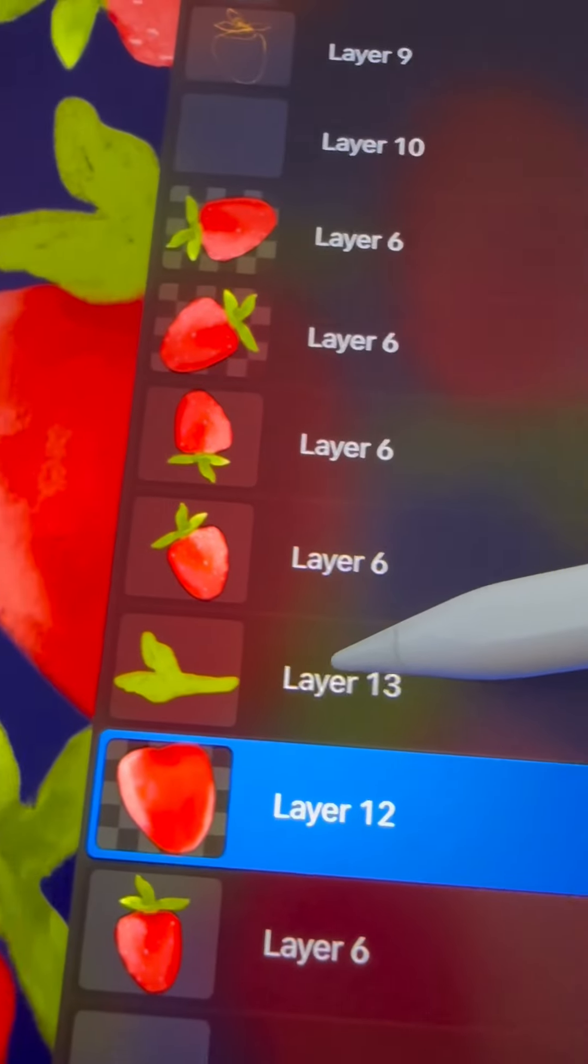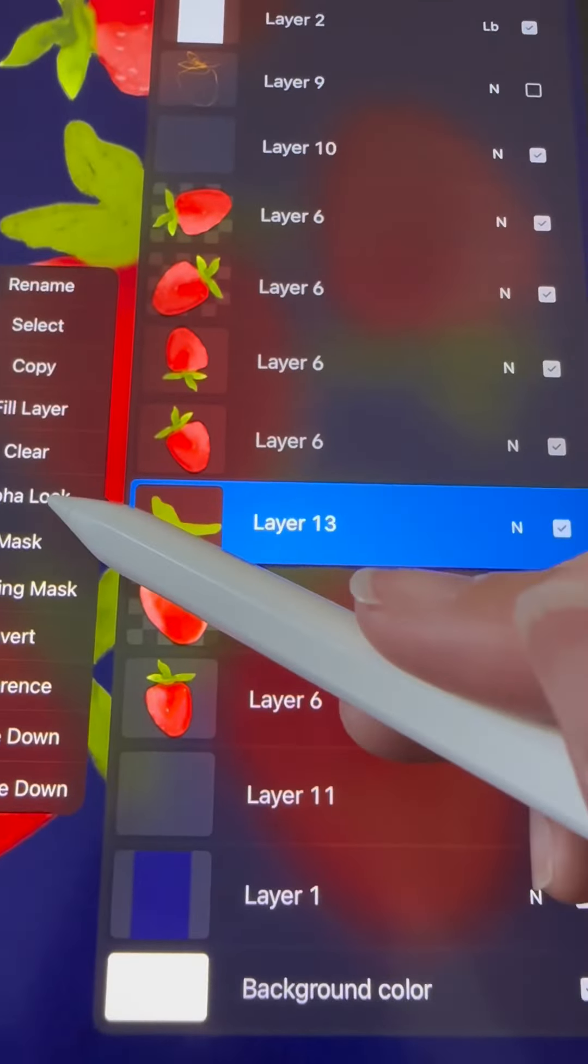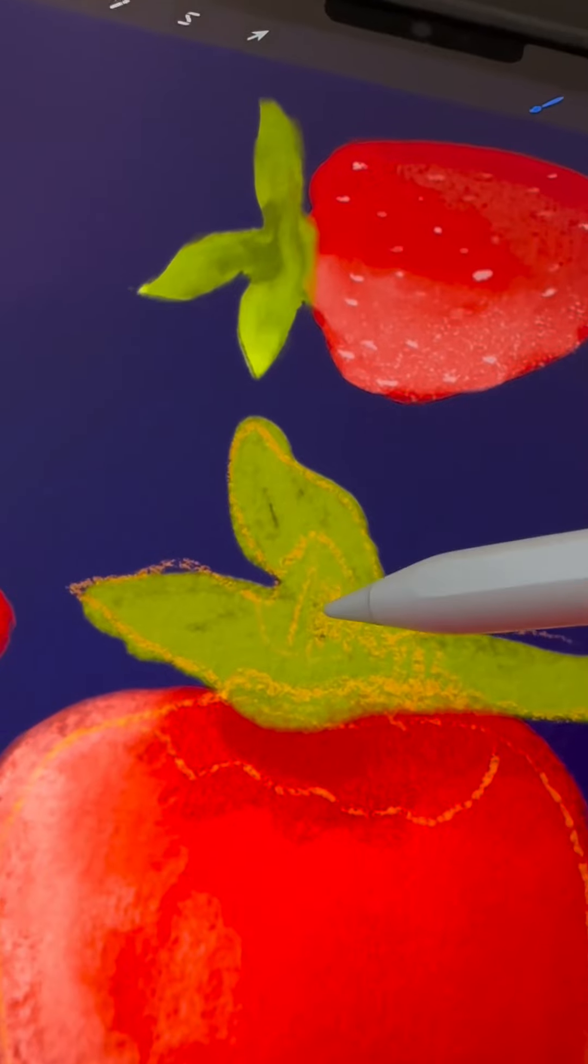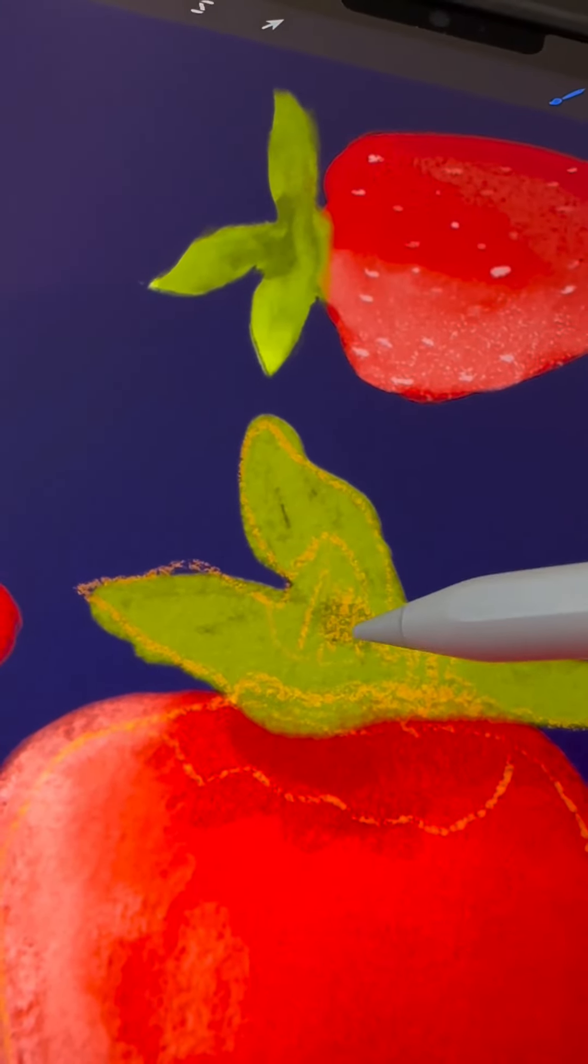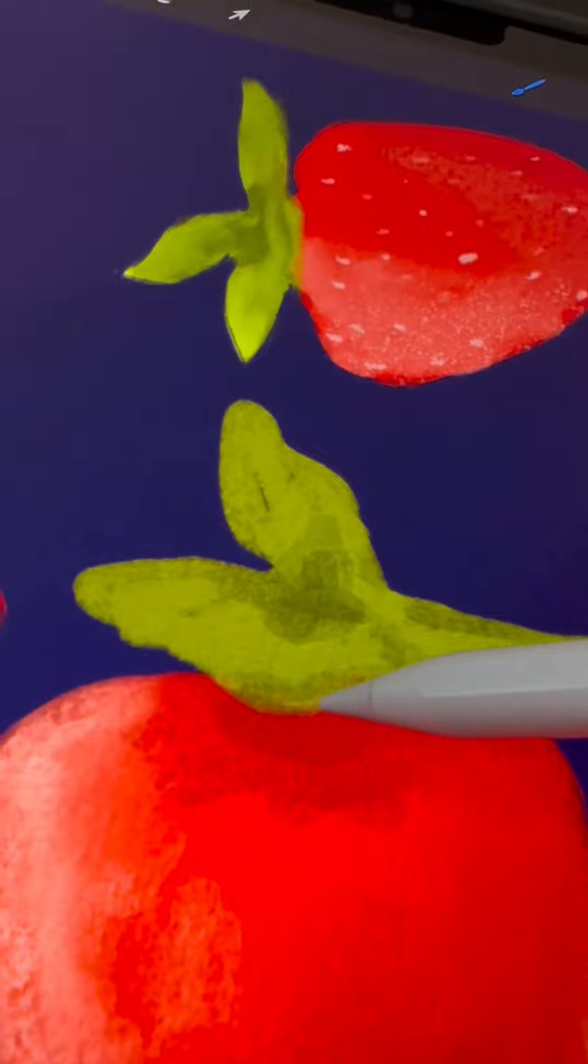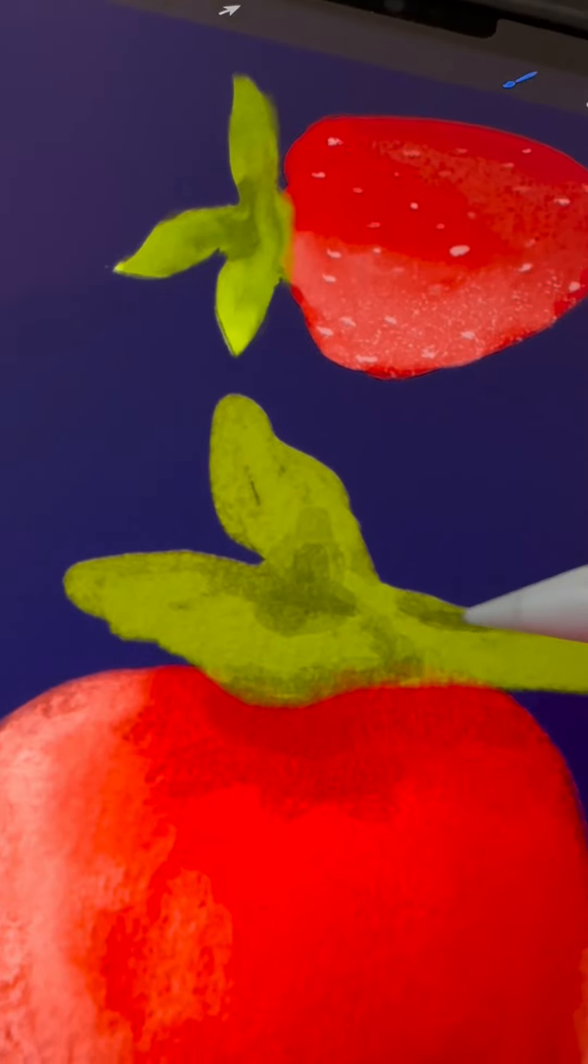Now, let's move on to the stamp. Just like before, turn on the alpha-lock mode, apply a dark green shadow underneath using the sketch as a guide, and then turn off the sketch layer for better visibility.